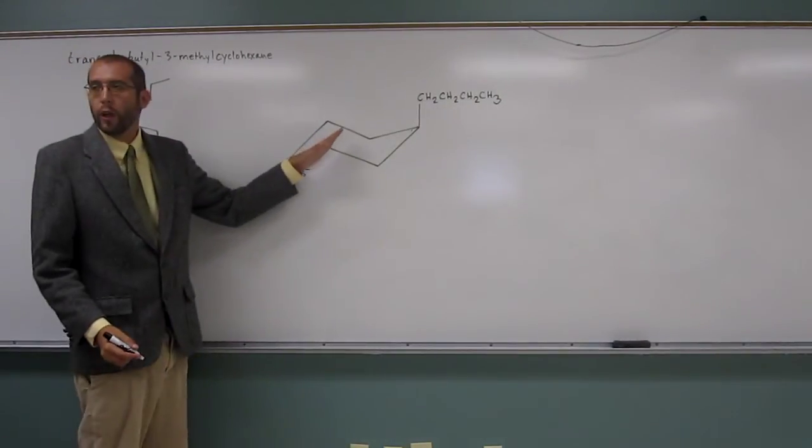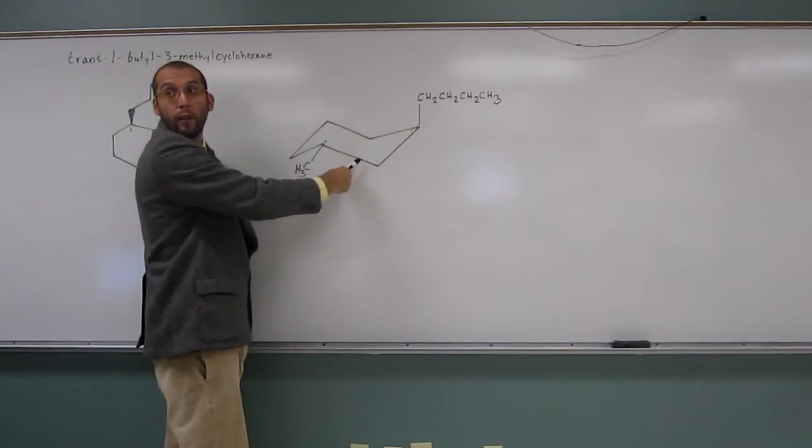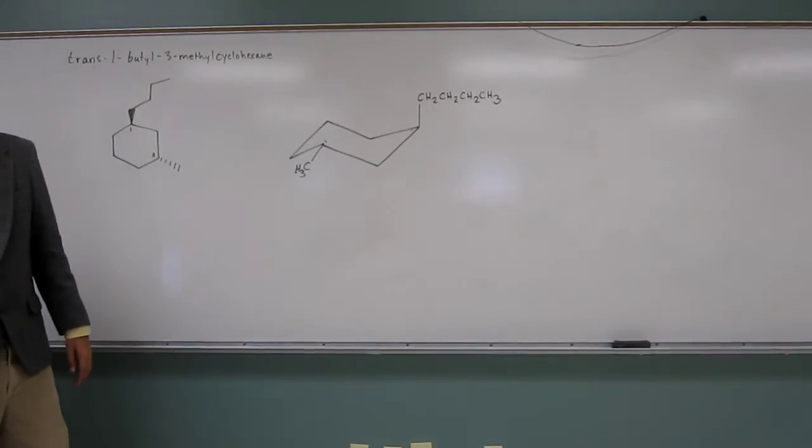Remember, your equatorial bonds are always parallel to two bonds away, so this one's going to be parallel to that one there, and that one, does that make sense, remember that rule?